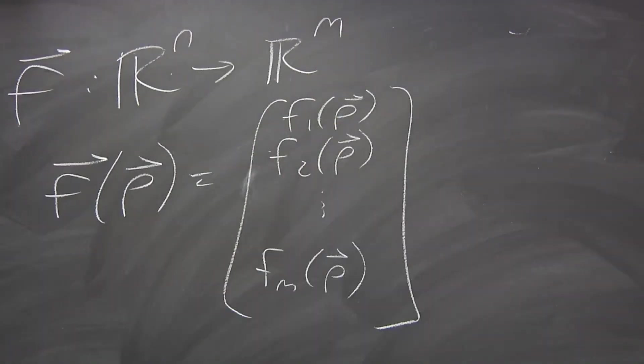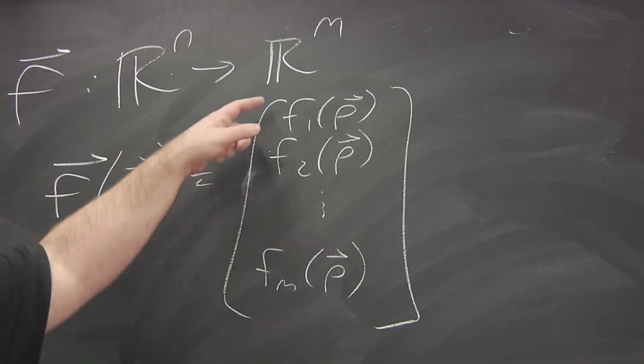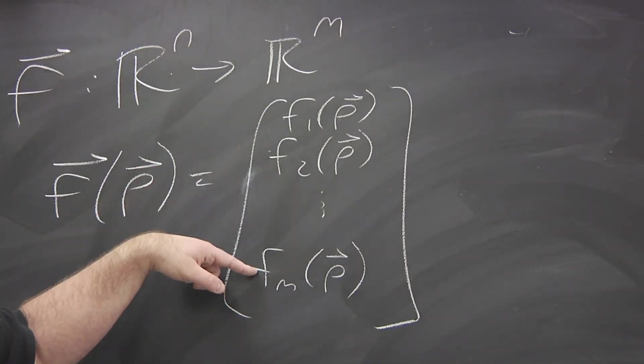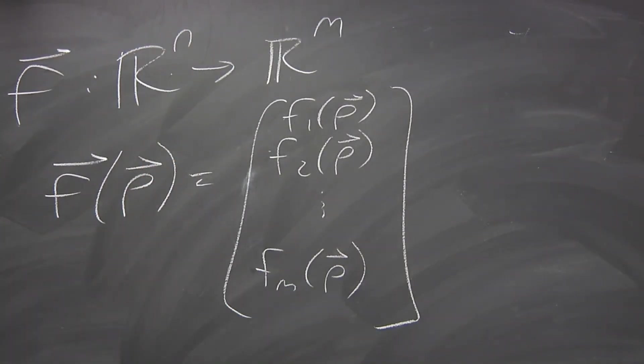So when you're computing partial derivatives, each one of these is going to have a gradient of its own. So to convey all the information you have about rates of change, you have to take into account all n of these variables and all m of these outputs.